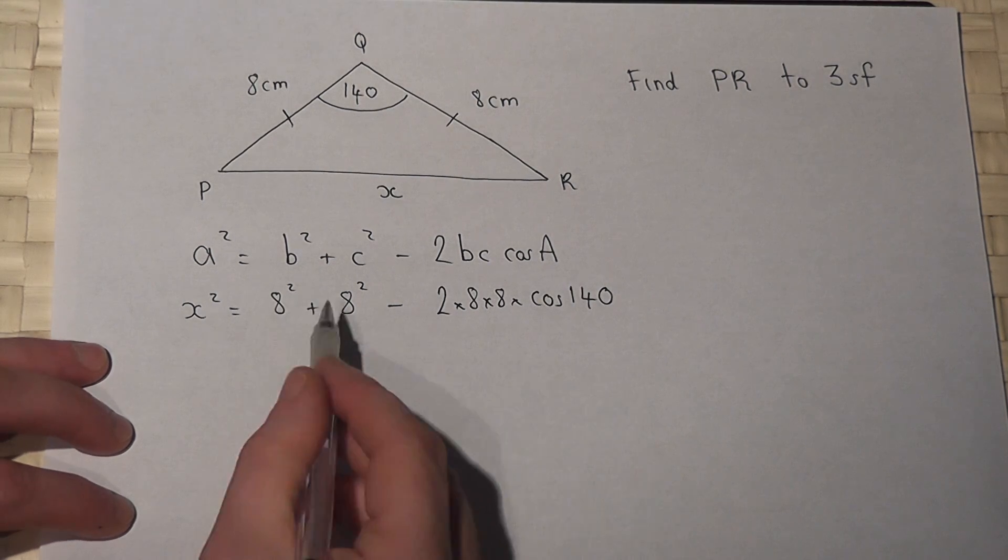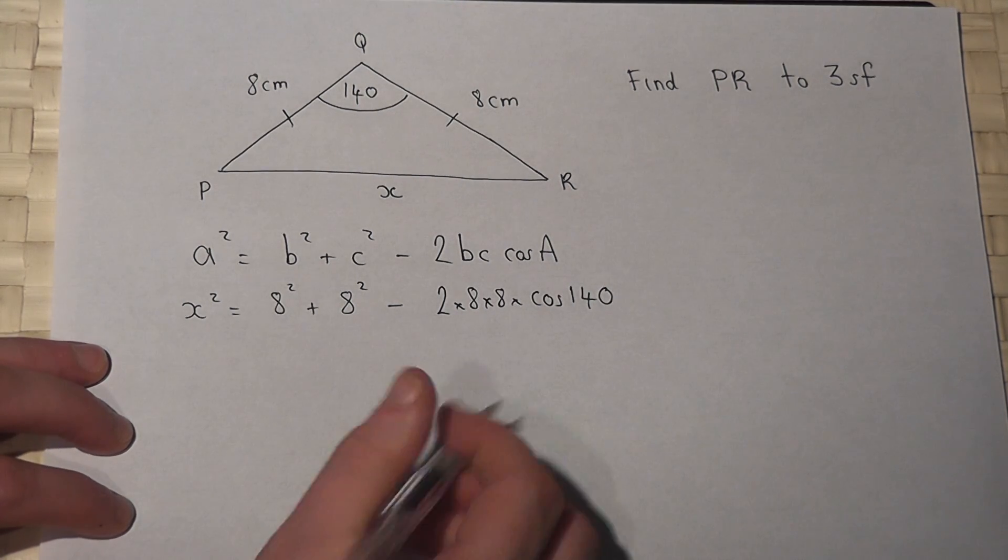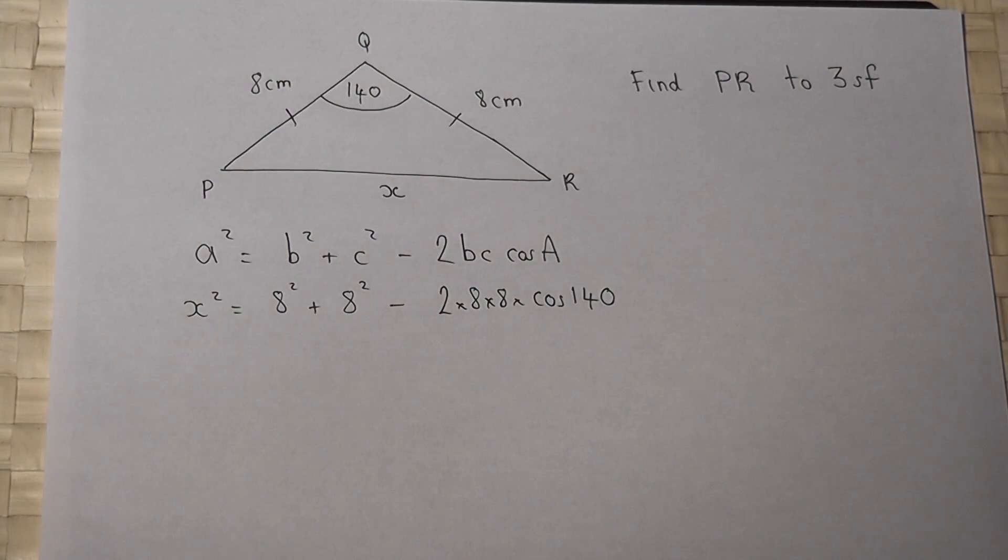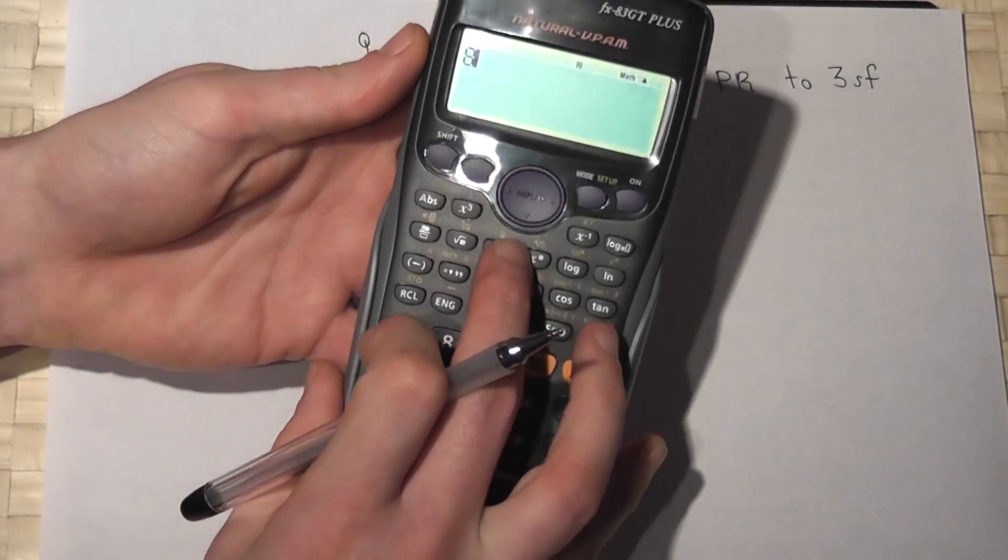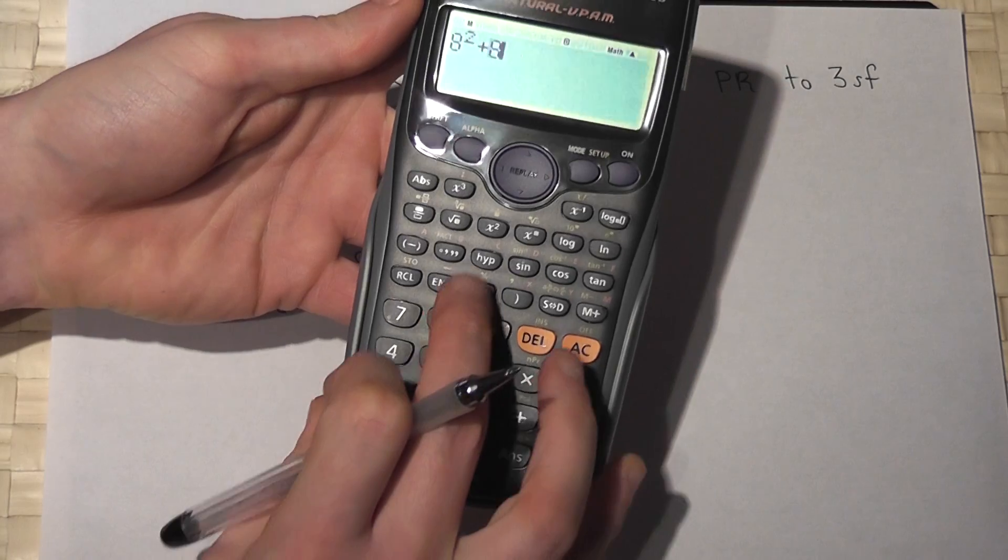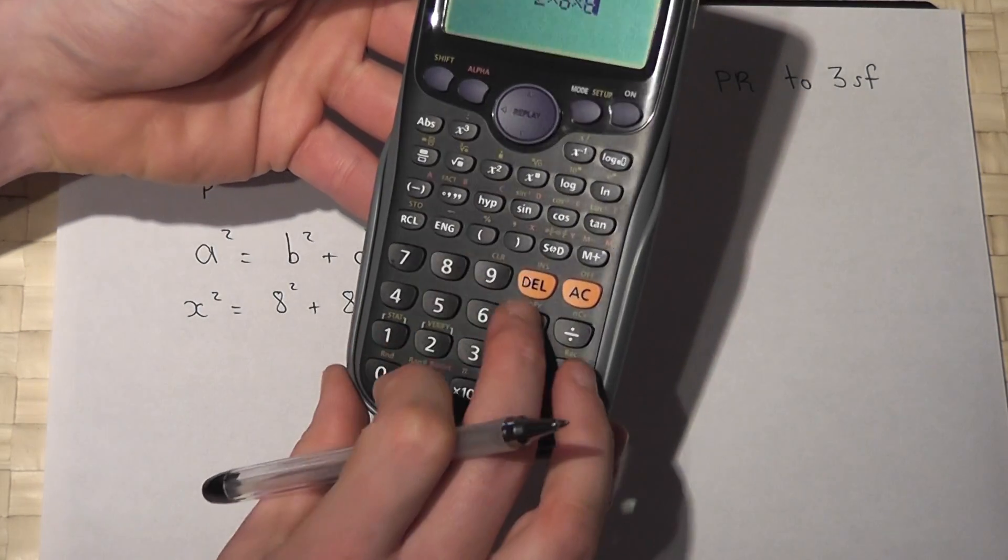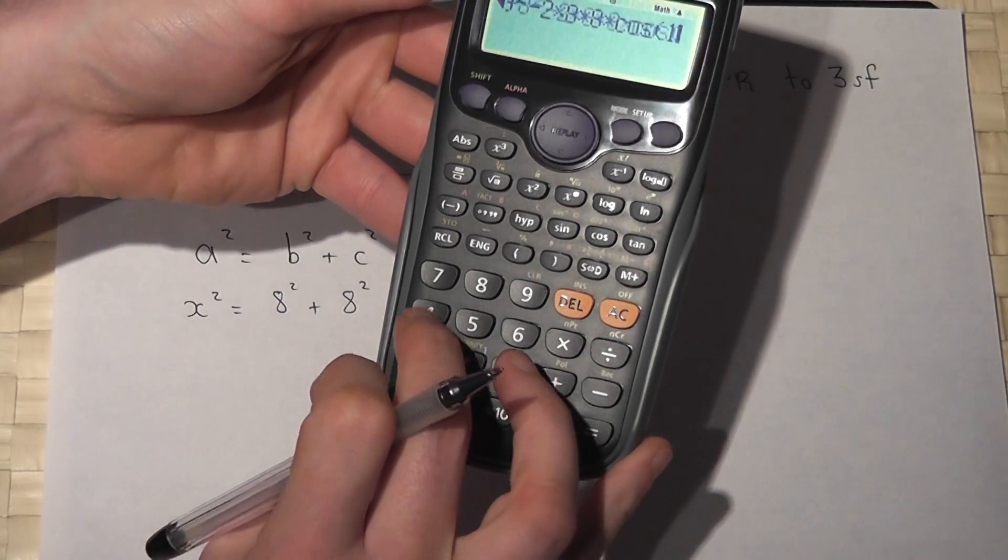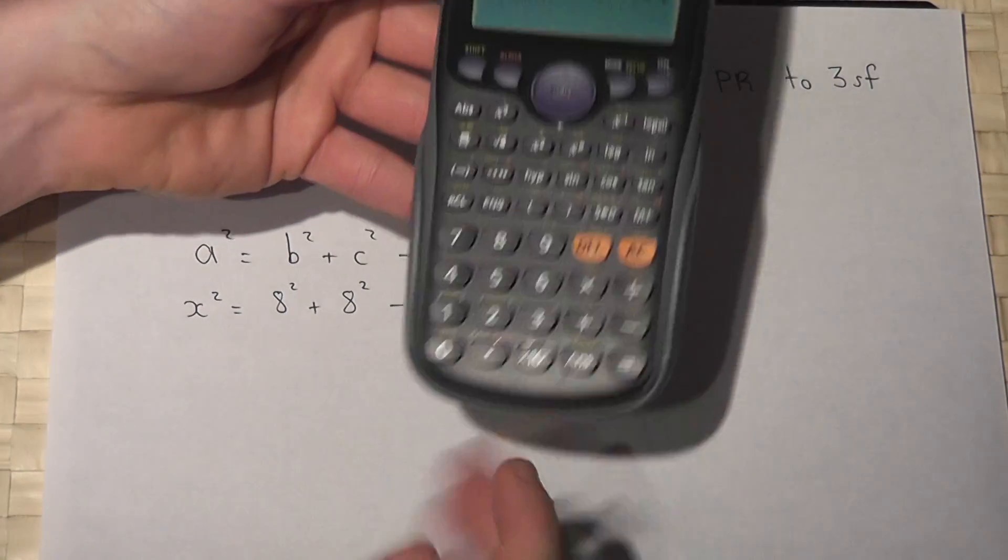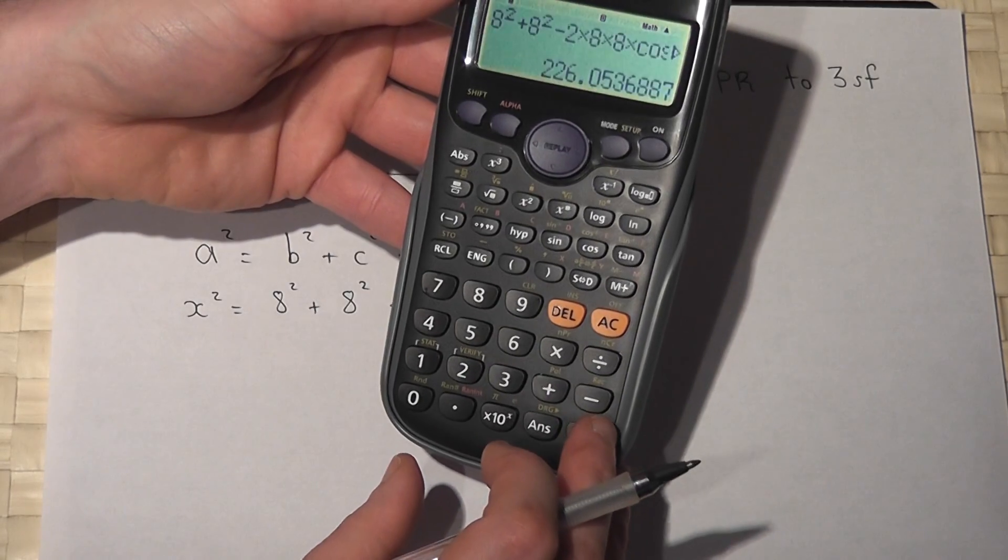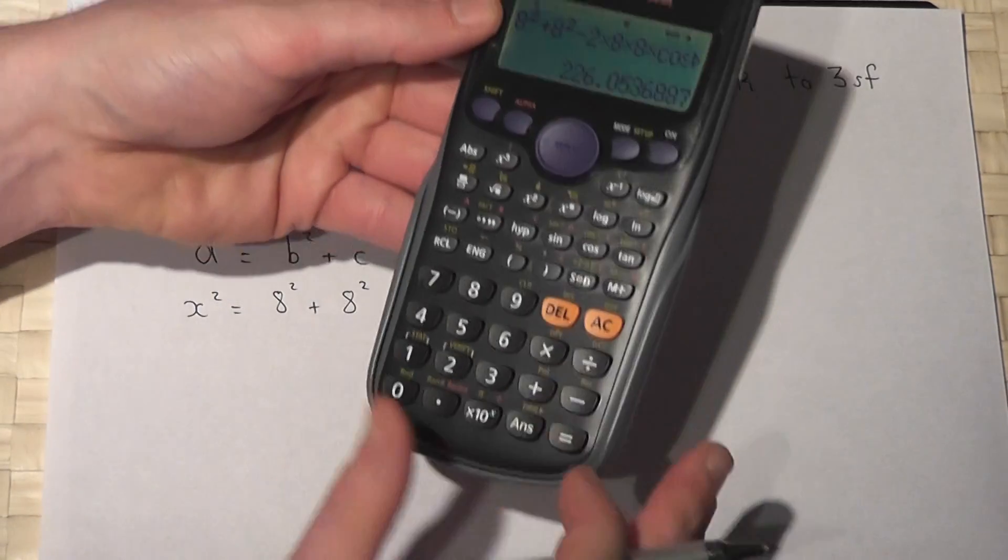So if I enter this into my calculator it will give me x squared. So here we go, it'll be eight squared plus eight squared, take away two times eight times eight times cos of 140. So I've entered that just as I see it on the page. Press enter and you get 226.05.